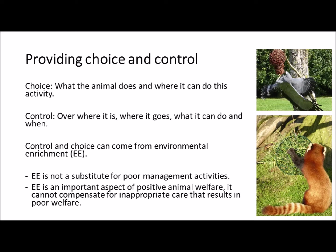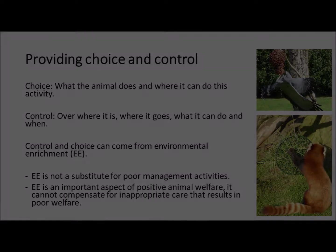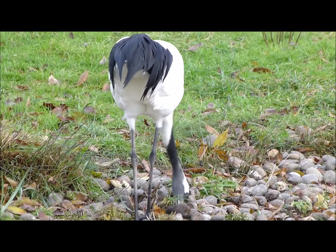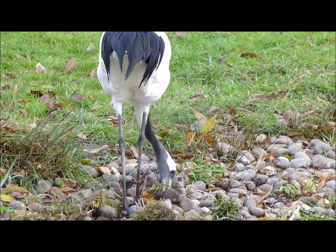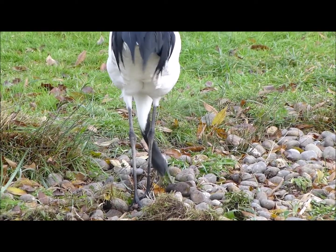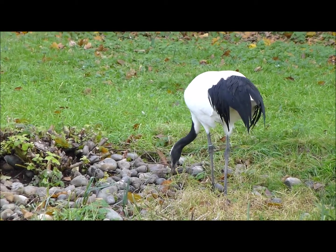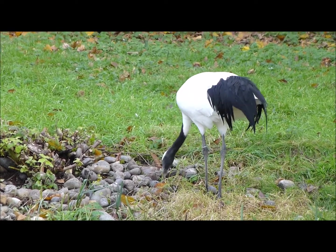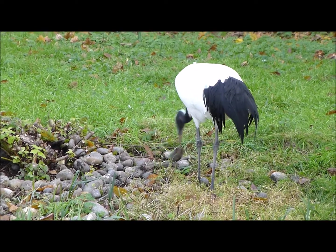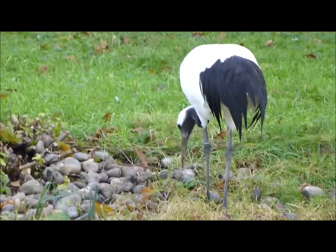It's important to remember that environmental enrichment is not a substitute for poor management activities. Environmental enrichment is an important aspect of positive animal welfare, but it cannot compensate for inappropriate care that results in poor welfare in the first place. Environmental enrichment need not be complicated and need not be expensive. Small changes or alterations to an animal's enclosure or immediate environment — as in the case here, with a range of substrates provided to this pair of cranes — enhances the foraging activities that the animals can perform, providing more control and more choice over the types of behaviour they can perform in different areas of their environment at different times of day.